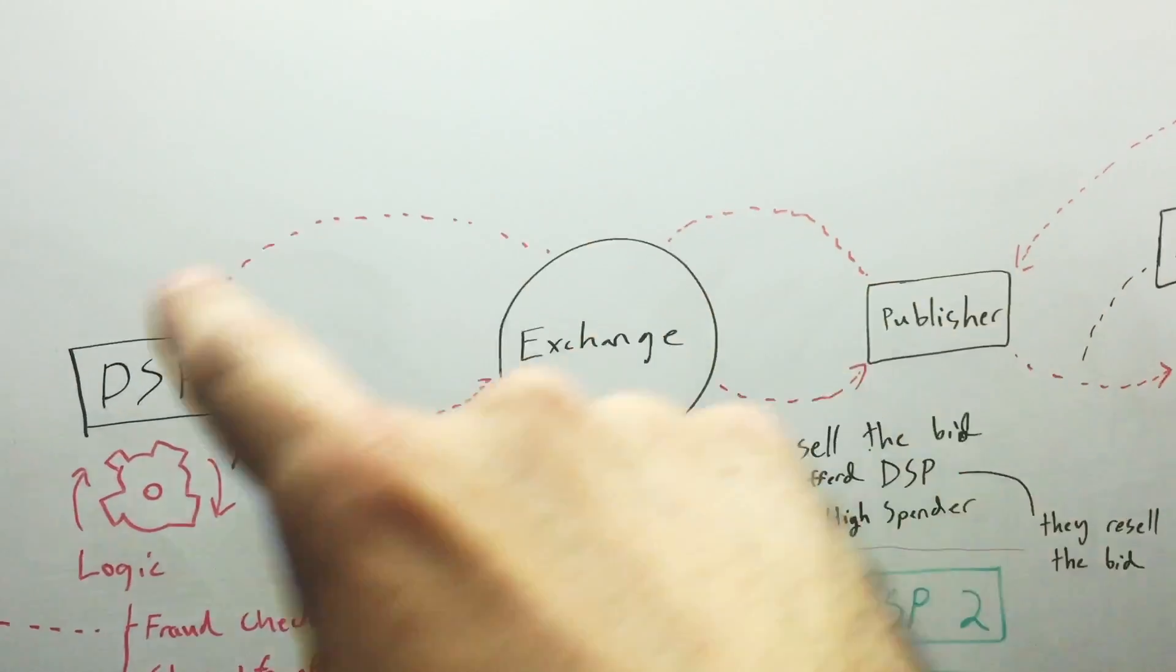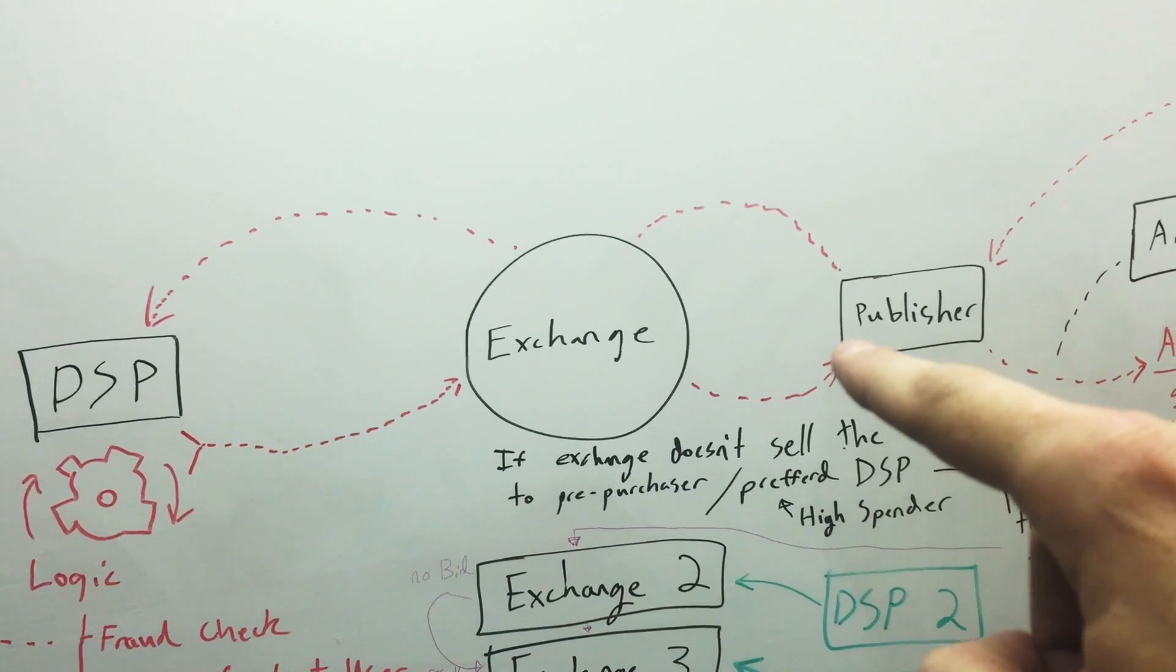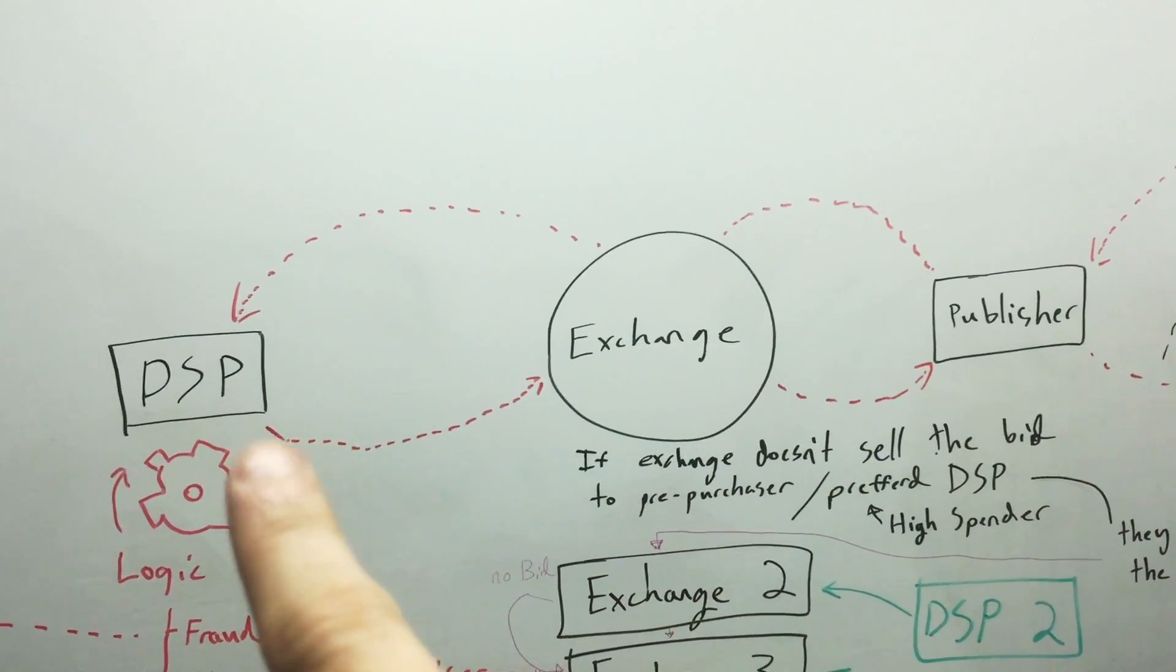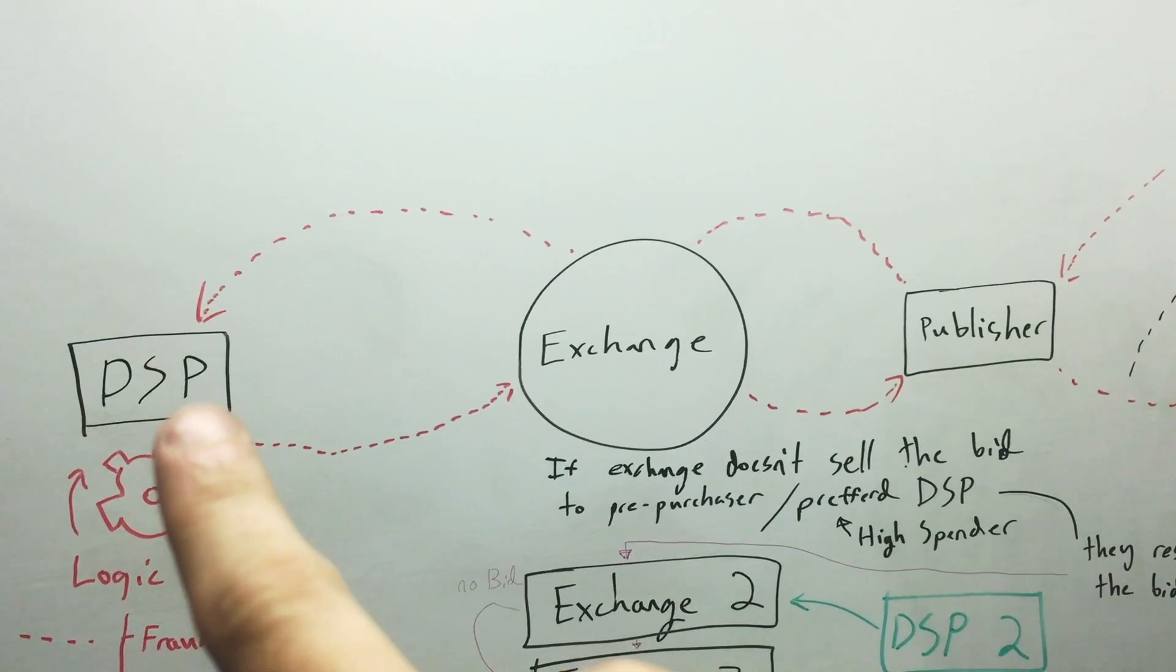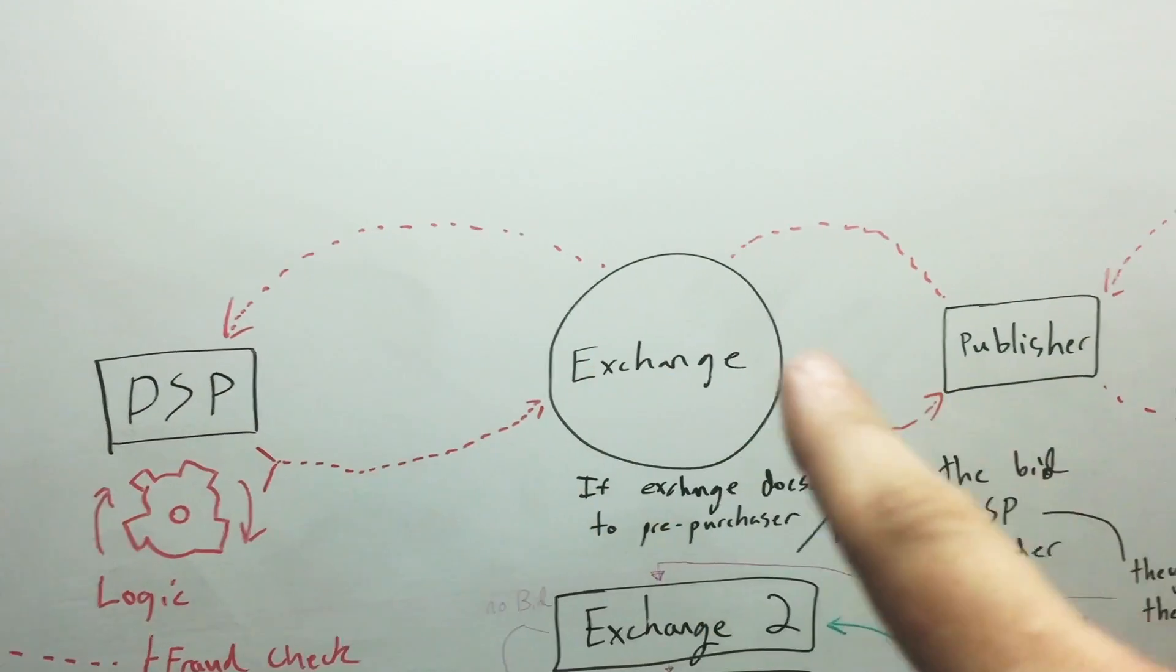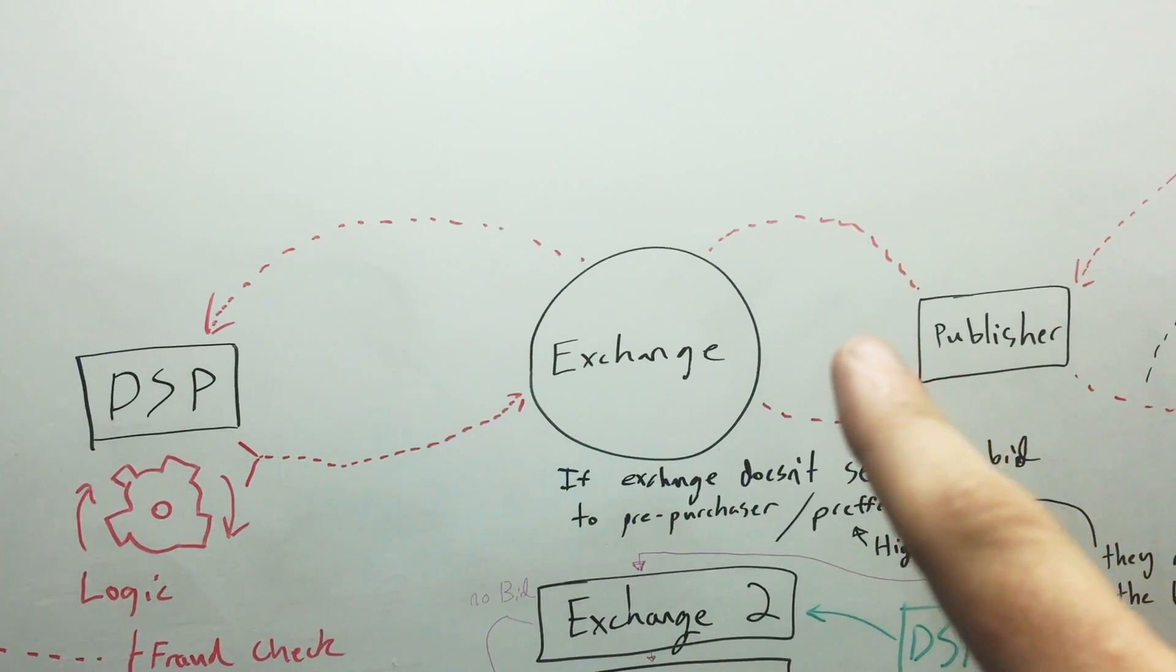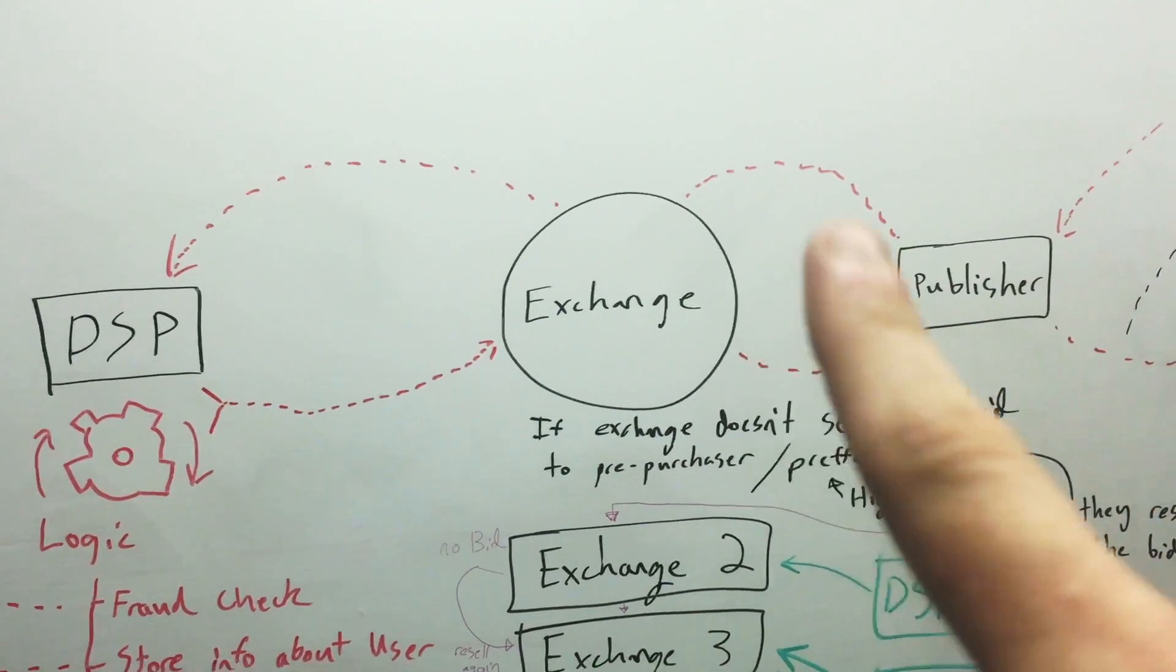In your optimum case you want to run from the publisher directly to the DSP and back without increasing the CPM, which is really hard to do. That means the DSP has to have a lot of its own technology built and not charge the advertiser for that technology. In an optimum environment you'd send it here, you'd send it back, and this would be like 20 cents CPM because that's really without the middleman, anywhere between 20 and like 40 cents, that's all it is.